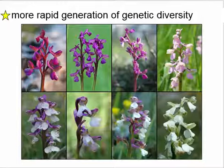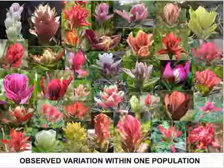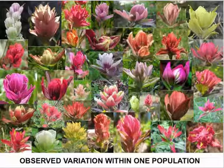Let's talk about advantages of sexual reproduction. The biggest advantage is probably that there is a more rapid generation of genetic diversity. For example, these different colored flowers are all the same species of plant but feature many different variations in color. The population is all of the members of the same species in an ecosystem — hopefully you remember that term from seventh grade.